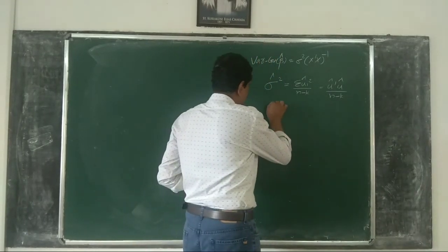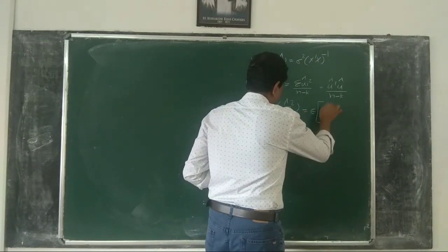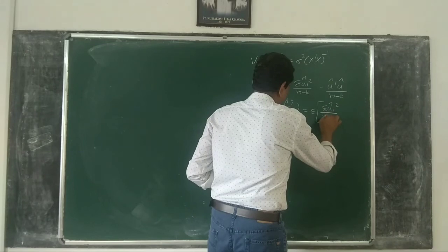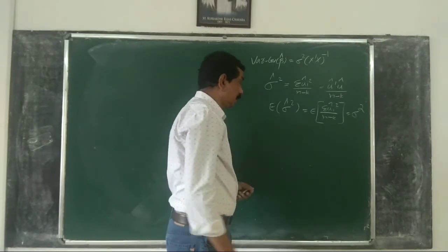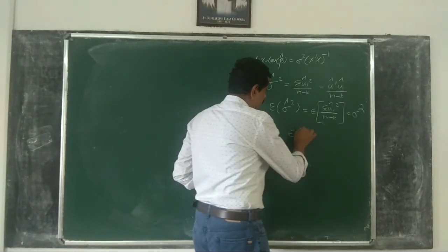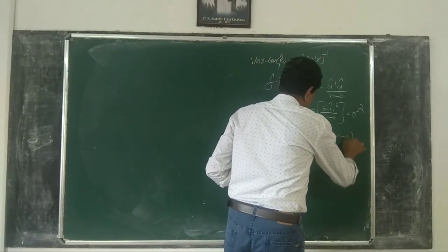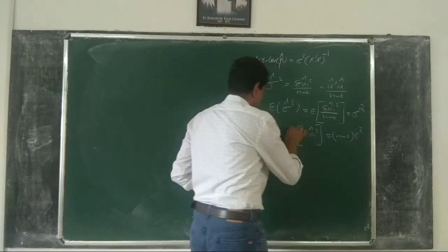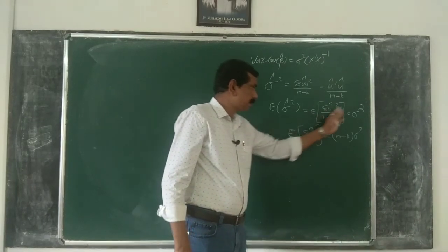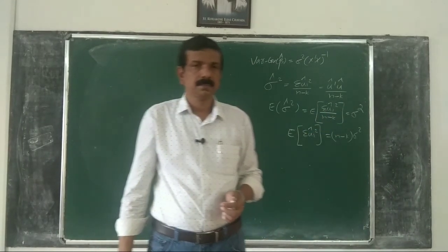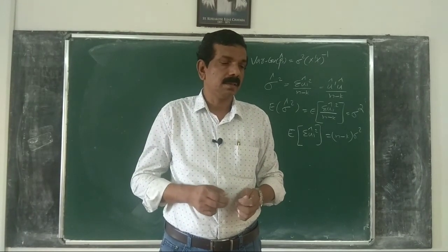If you take the expected value of sigma-hat squared, it equals the expected value of the sum of u-hat_i squared divided by n minus k, which gives n minus k times sigma squared. So the expected value of the sum of u-hat_i squared is n minus k times sigma squared. But we have not proved this formally yet.